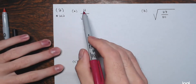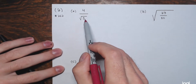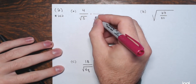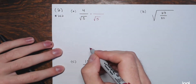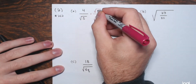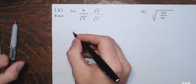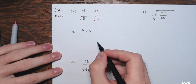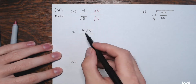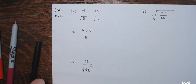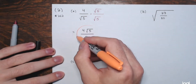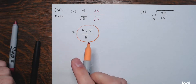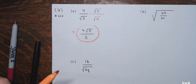We have 4 divided by the square root of 5. Multiply numerator and denominator by the square root of 5 — that way I get the square root of 25, a perfect square. The numerator becomes 4 times the square root of 5, and the denominator becomes the square root of 25, which is just 5. So the result is 4 times the square root of 5 divided by 5 — an equivalent expression with a rationalized denominator.